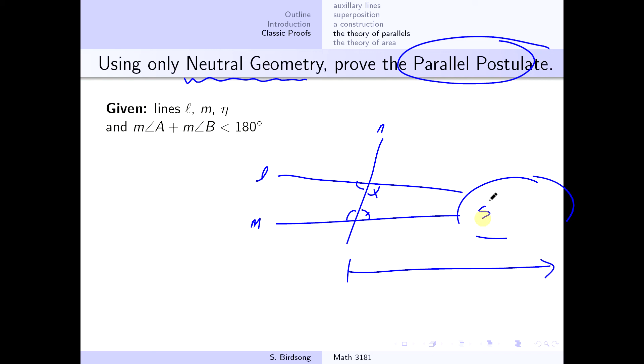So what we want to show, or what we want to end up with, is we want to show that these two lines right here are going to actually intersect, they're actually going to cross. So that's the goal of where we're going to.